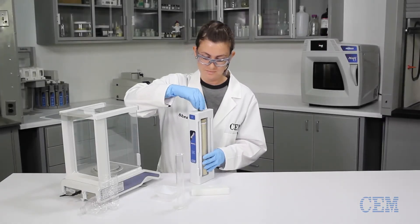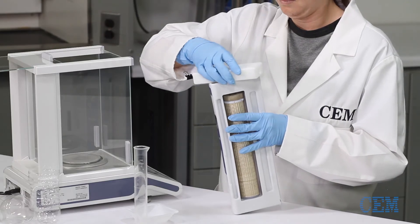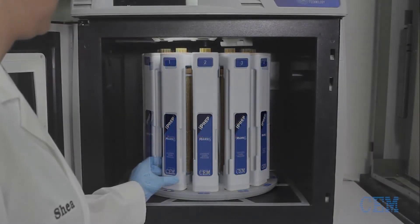With I-PREP, all you need is a simple hand tool to seal the vessel. There's no need for heavy duty wrenches. The vessels are then loaded into the carousel and the samples are ready to digest.